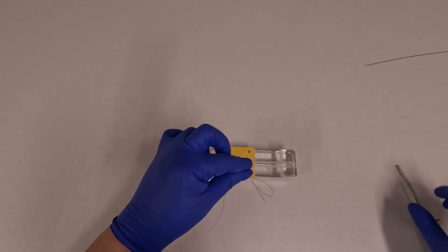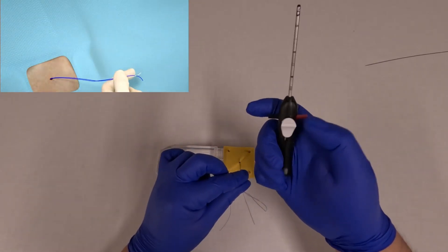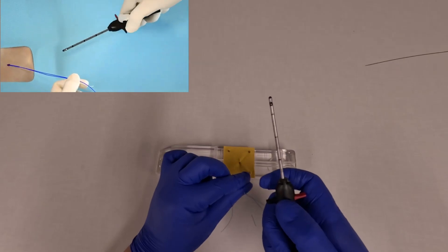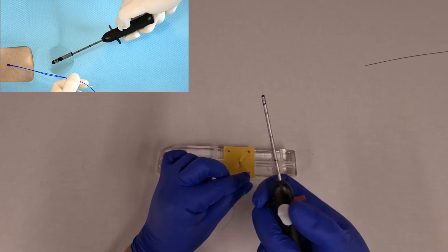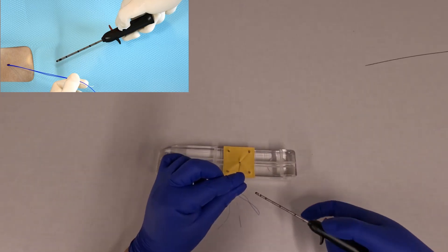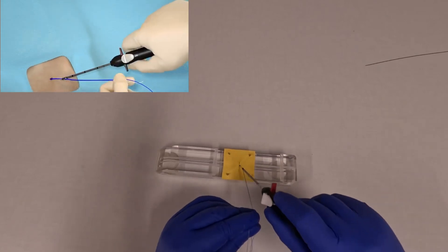Next take both the blue and white suture together and feed them onto the suture cutter. The suture cutter has two levers. The white lever opens and closes the trap door, and the red lever is what cuts the suture. So put both sutures in as you pull the white lever back.